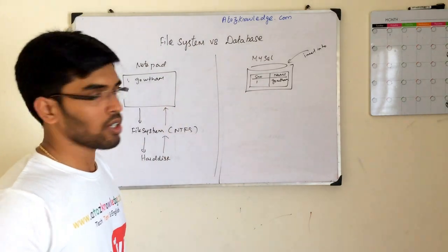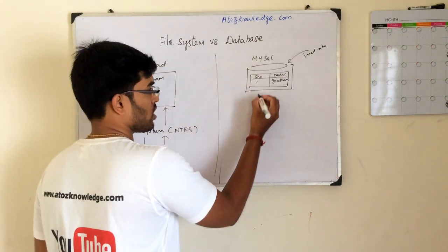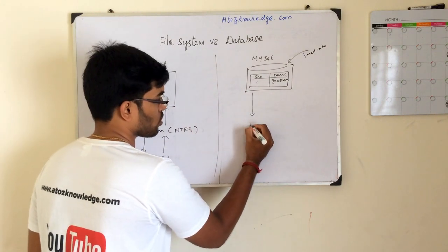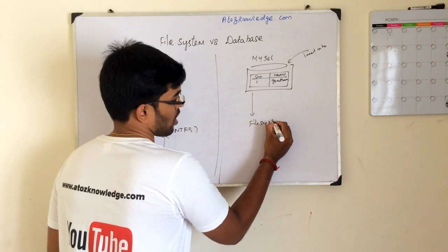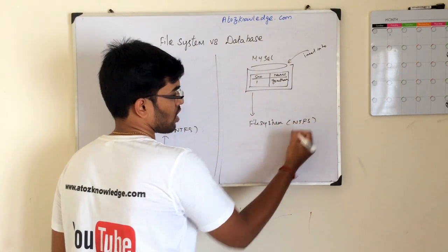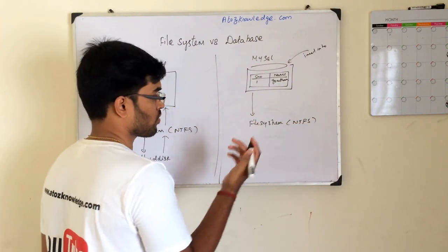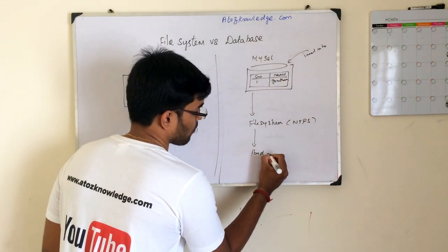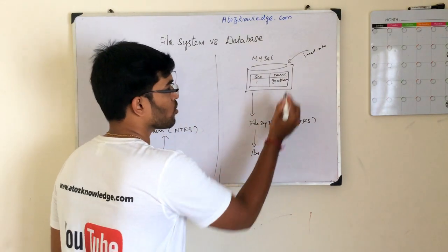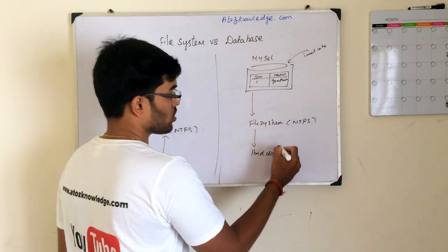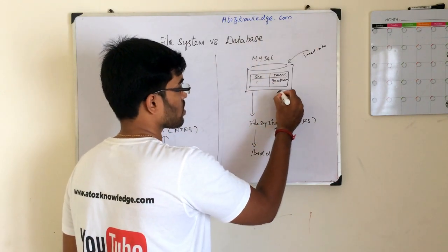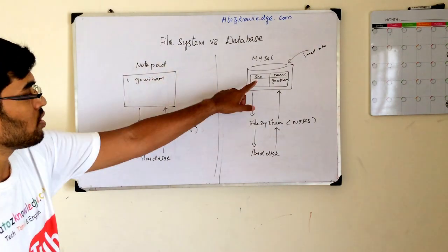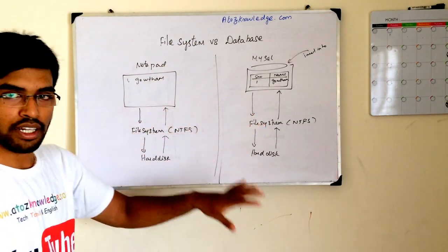How does this data get stored in MySQL and reach the hard disk? Same as before — it first goes to the file system, which is NTFS, because we are using Windows as an example. From the file system it goes to the hard disk. Again, if you want to read it, you do a SELECT * FROM table, and from the hard disk via the file system through MySQL you get the output. The application is different but the underlying storage mechanism is the same.